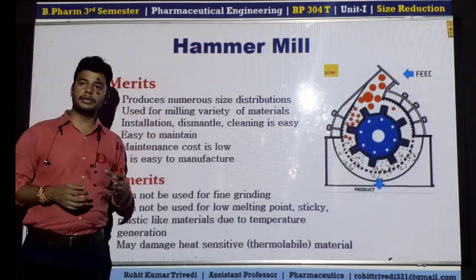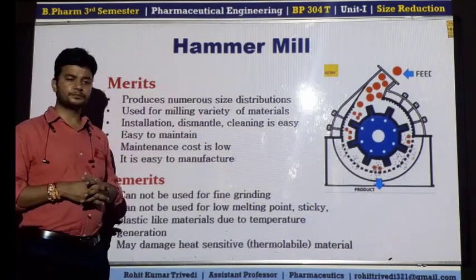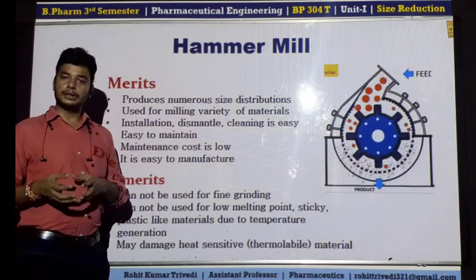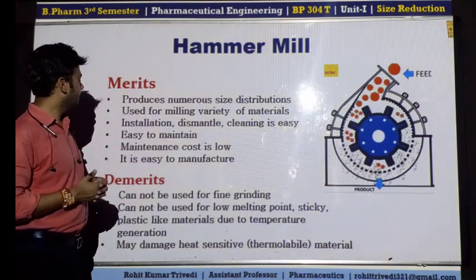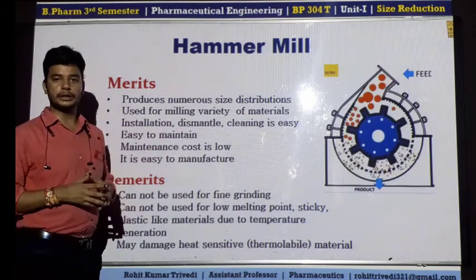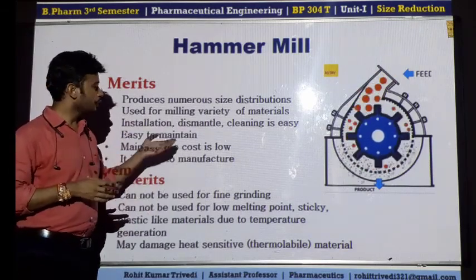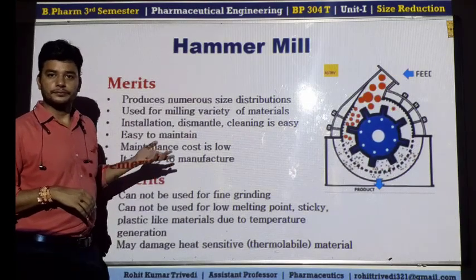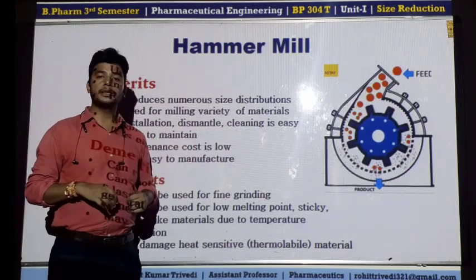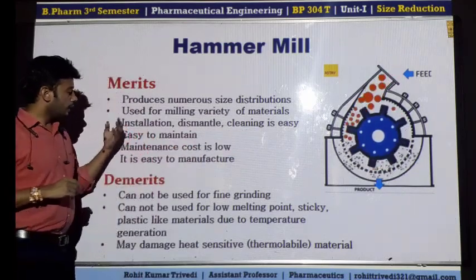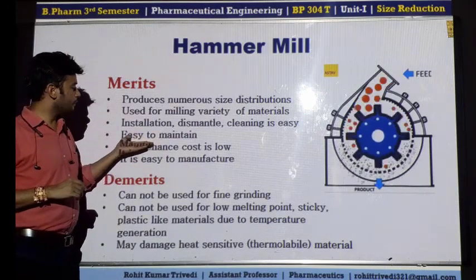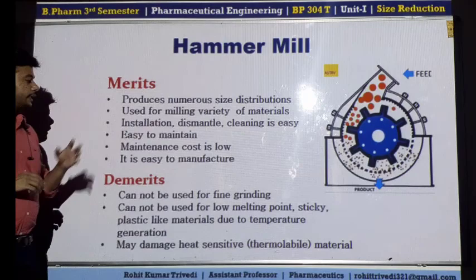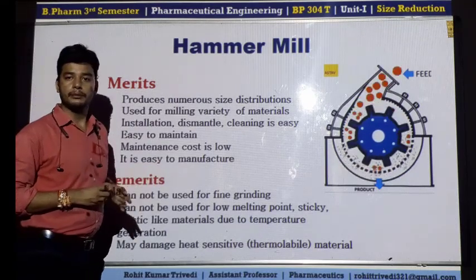It can be used for a variety of materials — many materials can be reduced in size, like roots, bark, leaves, API, and excipients. The variety of materials can be reduced very easily using the hammer mill. Installation, dismantling, and cleaning of the machine is very easy. If you are going to install or dismantle and move all the parts to another area, it can be done very easily. The maintenance of the machine is very low and very easy.